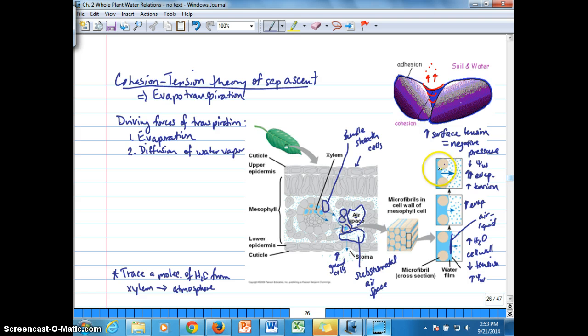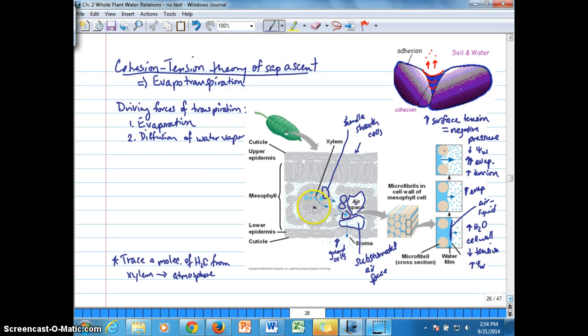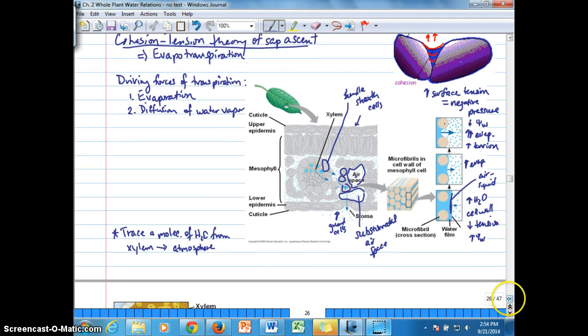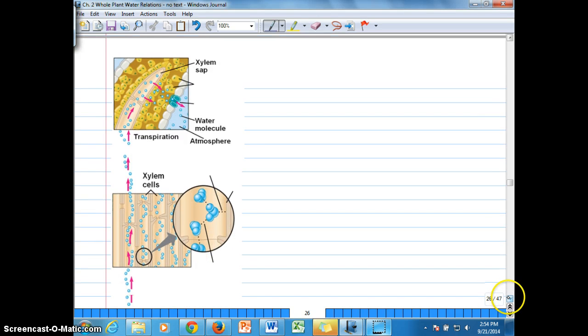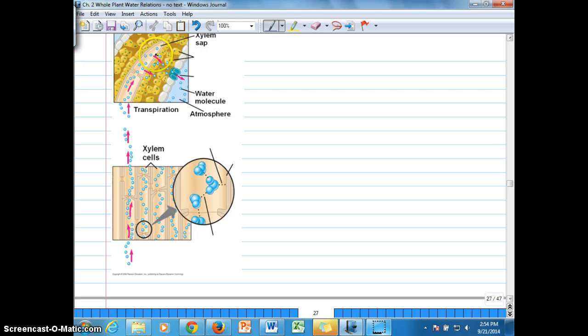So as the water evaporates, it goes from the liquid state to the vapor state, the remaining water has a strong surface tension, which is creating that negative pressure, and because of cohesion between the water molecules, and that's going to continue beyond just from xylem out into the apoplast, but all the way down through xylem.